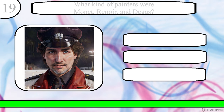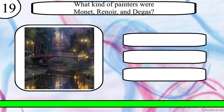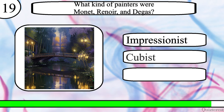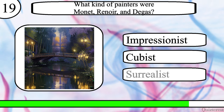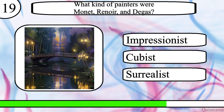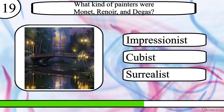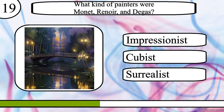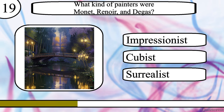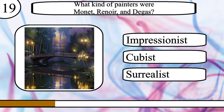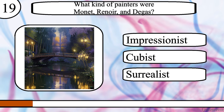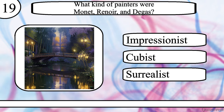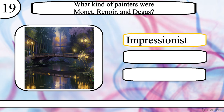Question 19. What kind of painters were Monet, Renoir and Degas? Impressionist, cubist or surrealist? The correct answer is Impressionist.